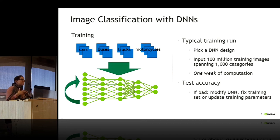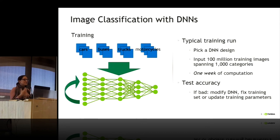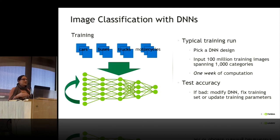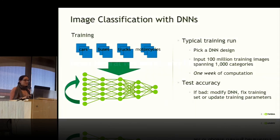This is a very different way of working than in the past — it's not like a physical simulation where you know your parameters and launch it once. In a typical deep learning training run, you pick a neural network design, input 100 million training images spanning 1,000 categories, and it's one week of computation. But you're not sure you chose the right parameters, so you do that again and again. You might need to do it 20 times, but you don't have those six months. That's why people resorted to GPUs.